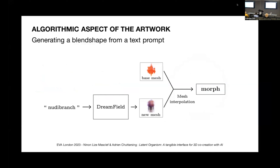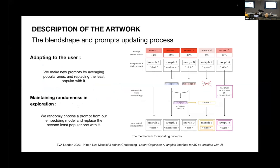For each generated mesh, a blend shape is calculated, allowing a seamless transition between the initial shape and the new one. These blend shapes are controlled by the sensors of the artwork's physical interface, responding to user interactions. Multiple blend shapes can be crossfaded simultaneously, adding an extra dimension of complexity to the mesh deformation.